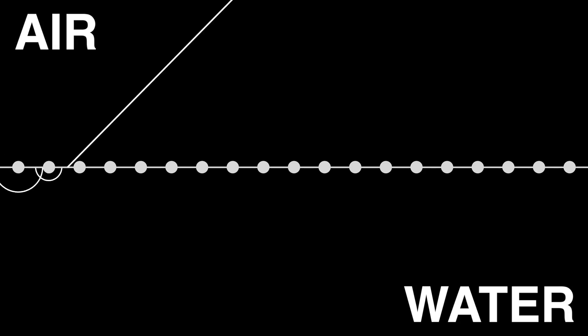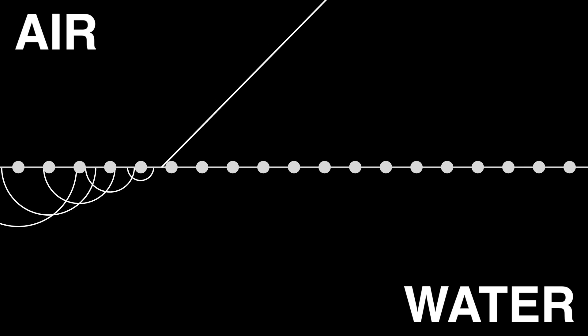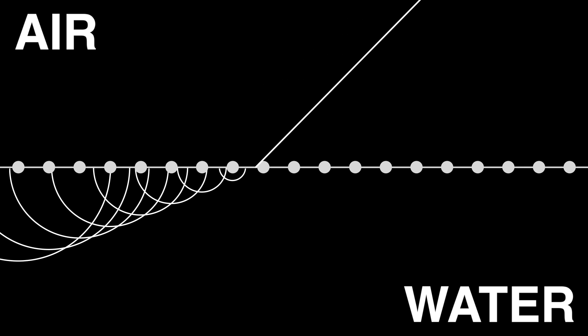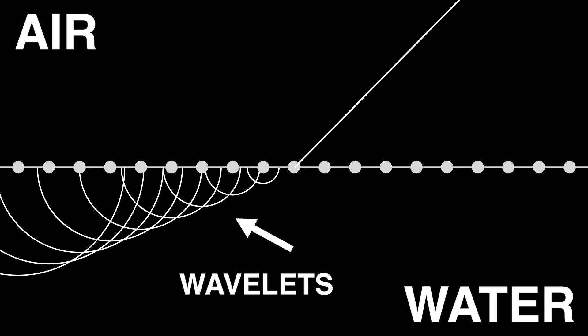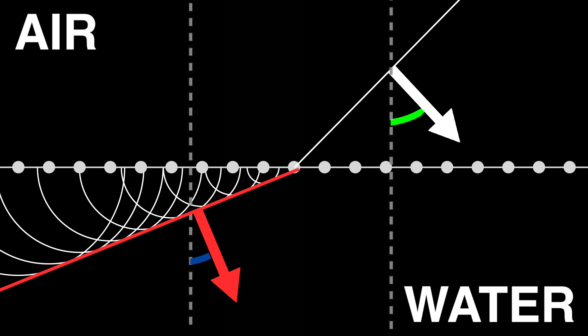Going back to our wavefront animation, you can see that as the wavefront strikes the water, we see the same wavelets, but they travel slower through the dense water. The preponderance of the refracted wavefront moves through the water at an angle to the normal smaller than the incident angle, making for an angle of refraction that is smaller than the angle of incidence.